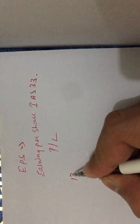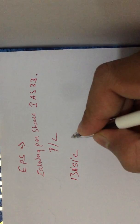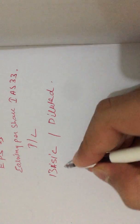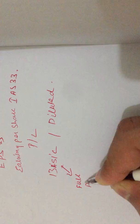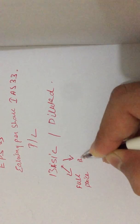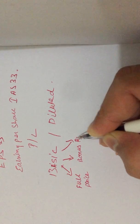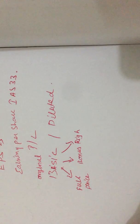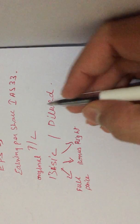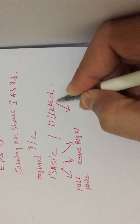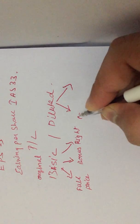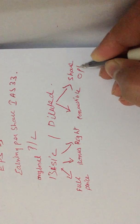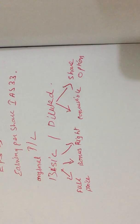We have two categories: basic shares and diluted shares. In basic shares we have full price shares, bonus shares, and rights shares. These are the original shares — shares which are originally there in the market. The second type covers convertible bonds and share options.